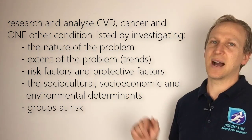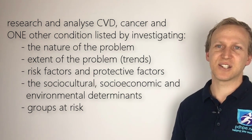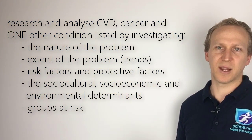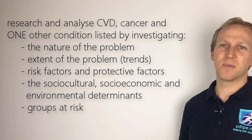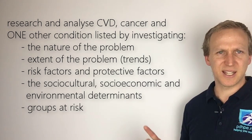This is our second video for the critical question: what are the priority issues for improving Australia's health? For health priorities in Australia we are looking at high levels of preventable chronic disease, injury, and mental health problems. This video is only going to look at cardiovascular disease, focusing on Learn 2, which asks you to analyze and research cardiovascular disease, cancer, and one other.